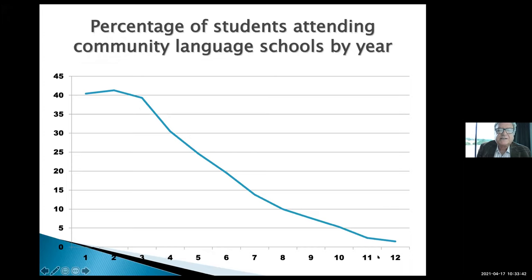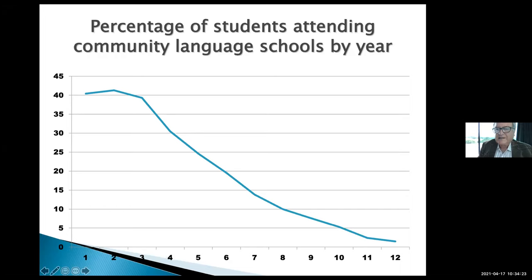In first, second, and third grade you can see that something like 40 percent of young children from your language background attend the schools — compared with the census data in New South Wales. But look at the dramatic drop around grades four, five, and six. When it gets to secondary school, under 10 percent of students of your background attend your schools. It varies a bit according to language — some schools have good uptake, others don't have the resources for secondary-age students.